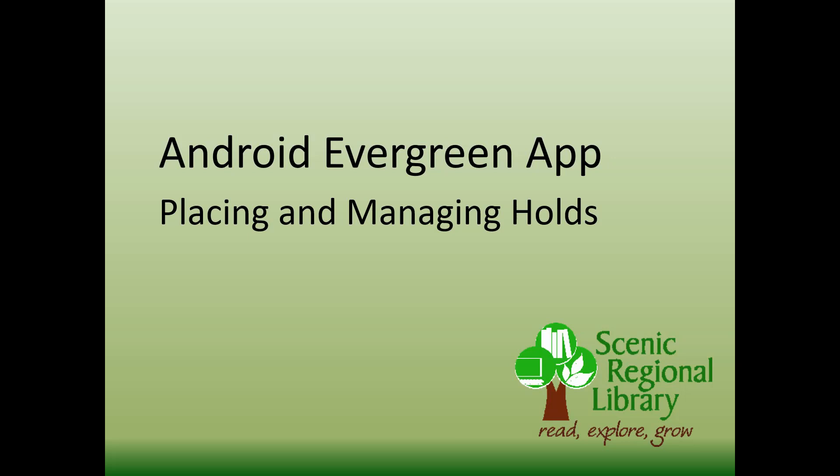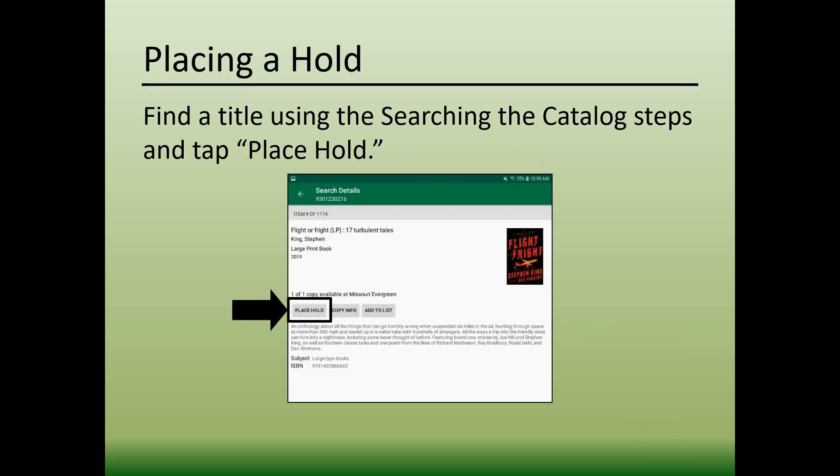Welcome to this tutorial video that will walk you through the steps to place and manage your holds in the Evergreen app for Android devices. To place a hold on a title you've found by searching the catalog, tap Place Hold on the item's details screen.